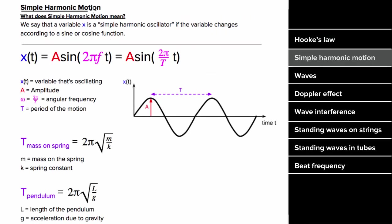What's a simple harmonic oscillator? A simple harmonic oscillator is any variable whose change can be described by a sine or cosine function.